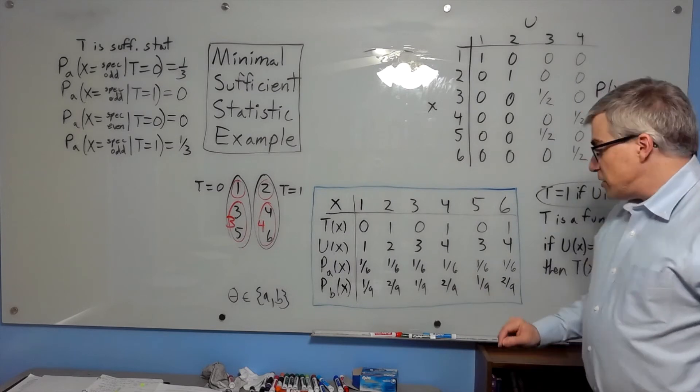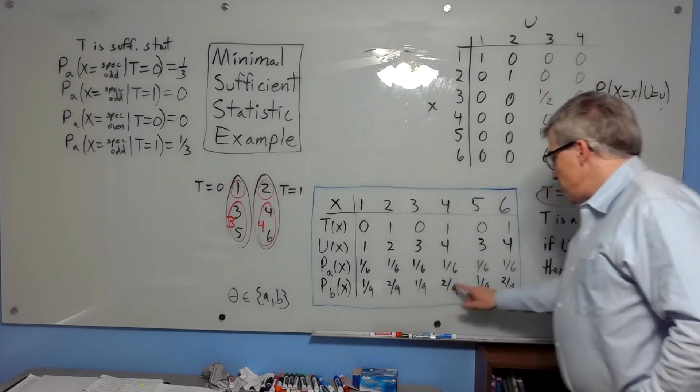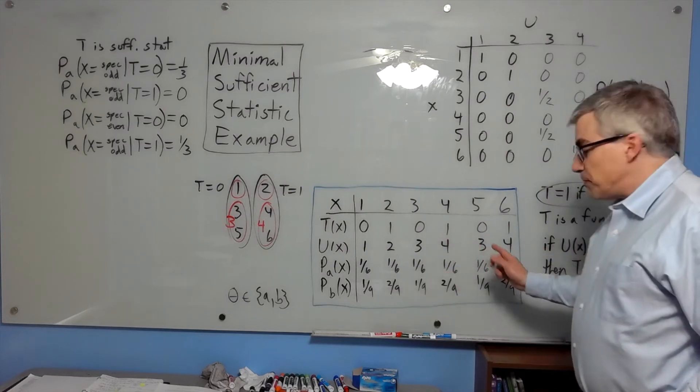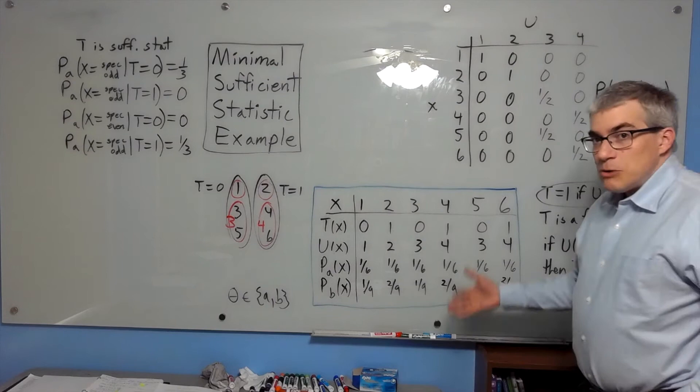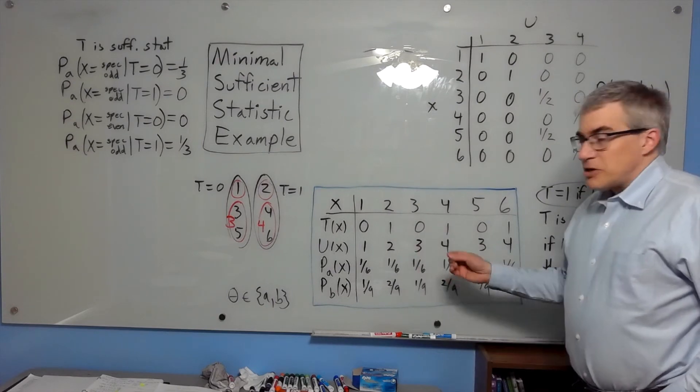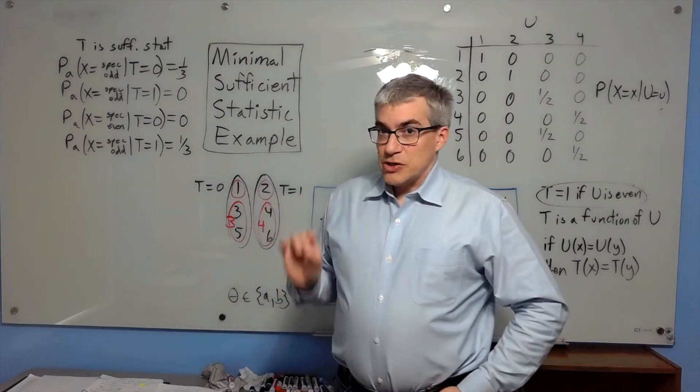And with the other value of theta, the other distribution, if it's even, they're all equally likely at two-ninths each. And if it's odd, they're all equally likely at one-ninth each. Which means when you've narrowed it down to that, the probability is one-third. So t is a sufficient statistic.